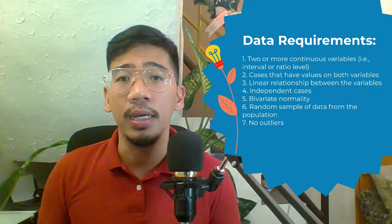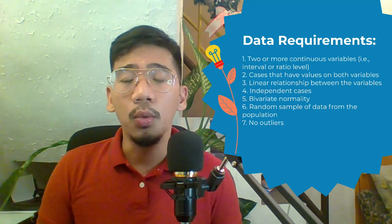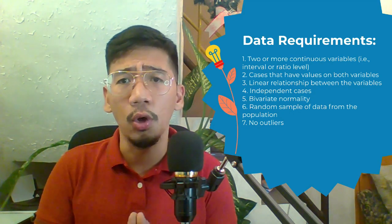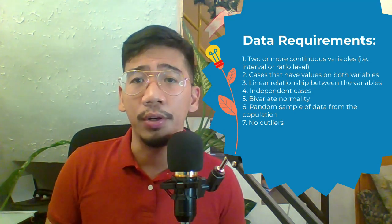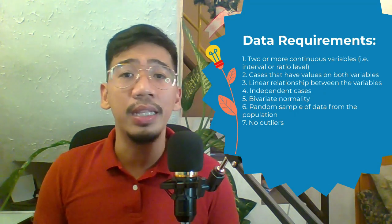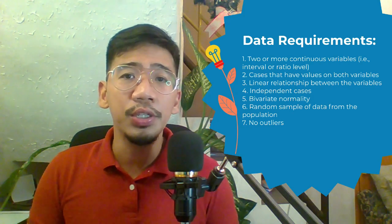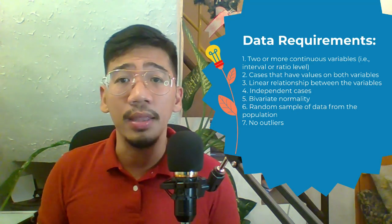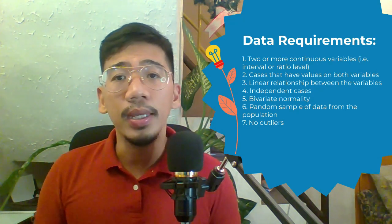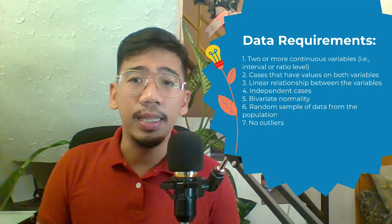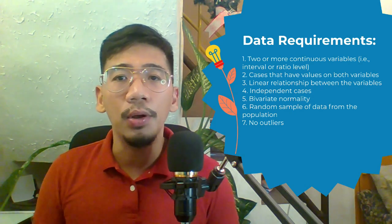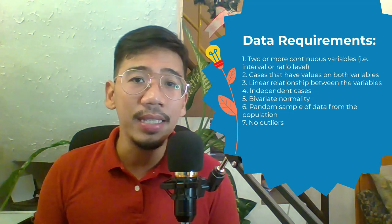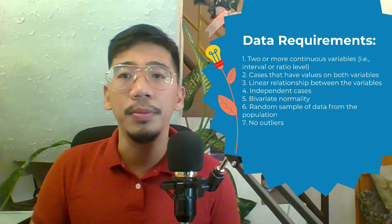The Pearson correlation coefficient and its corresponding significance test are not robust when independence is violated. Bivariate normality should also be met — each pair of variables should be bivariately normal, meaning normally distributed at all levels of the other variable. This assumption ensures that variables are linearly related; violation may indicate non-linear relationships exist. Linearity can be assessed visually using a scatter plot of the data. Additionally, there should be no outliers — no observation lying an abnormal distance from other values.